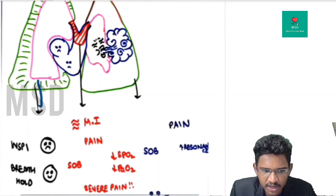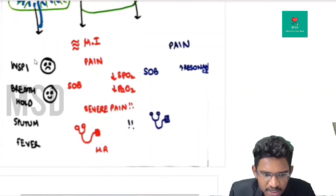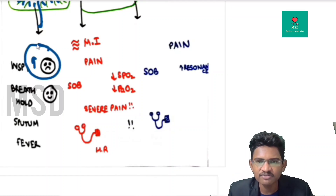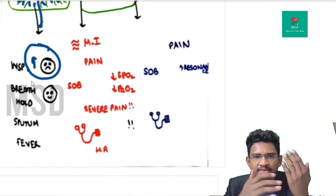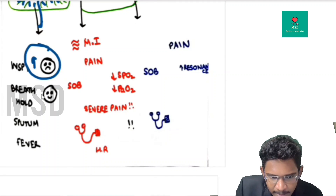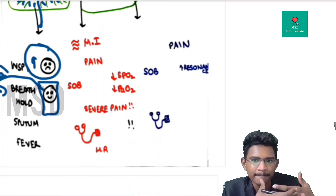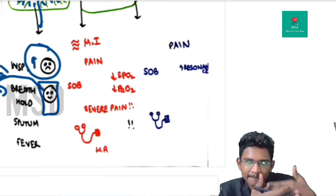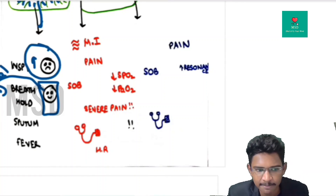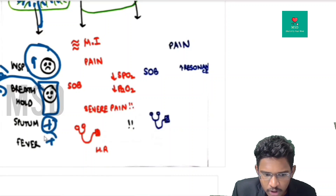Pleuritic chest pain results from fluid in the pleural cavity. Pain is exacerbated by inspiration as the lung expands and glides over the pleura. If you ask the patient to breath-hold, there is no pleural gliding and the pain disappears. This differentiates it from pericardial chest pain — in pericarditis, even with breath-holding, the beating heart continues to irritate the pericardium and pain persists.